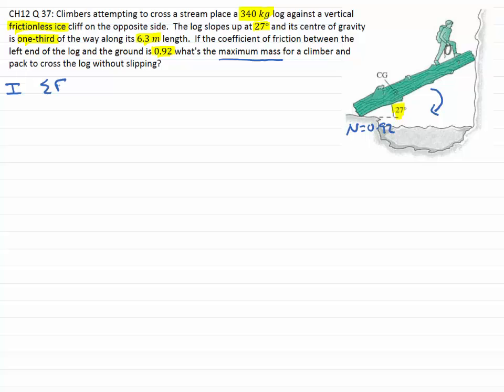It means the sum of the forces in the x-direction equals zero, the sum of the forces in the y-direction equals zero, and the sum of the torques about some pivot point, wherever you choose it, must be zero as well.